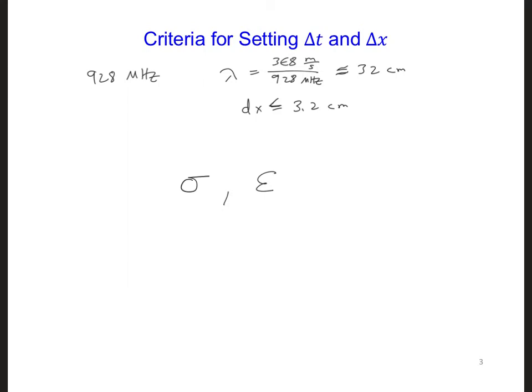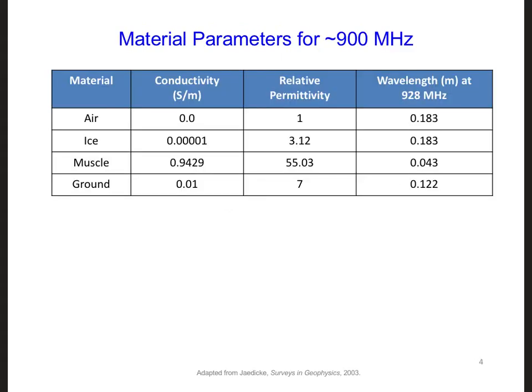All of the materials that we're modeling are non-magnetic, so mu, the permeability, is just going to be equal to mu naught, the same permeability as in free space. Here is a table that I found in the published literature that provides the conductivity sigma and the relative permittivity epsilon r for snow, ice, muscle, and sample ground at about 900 megahertz.